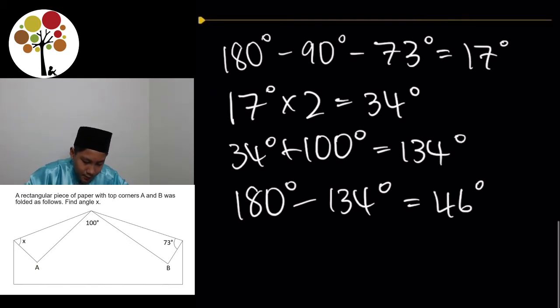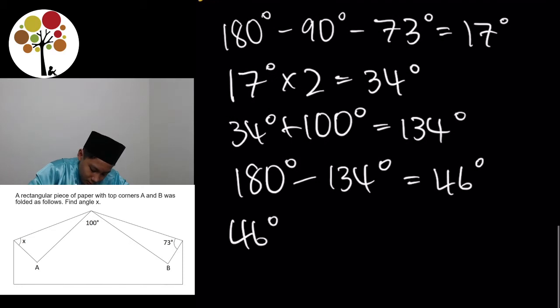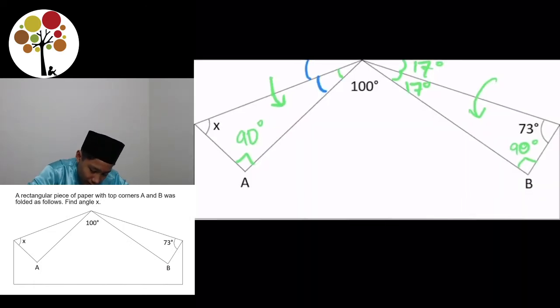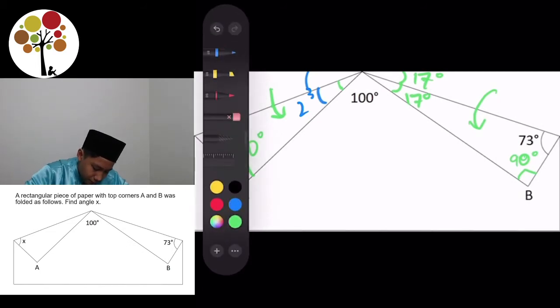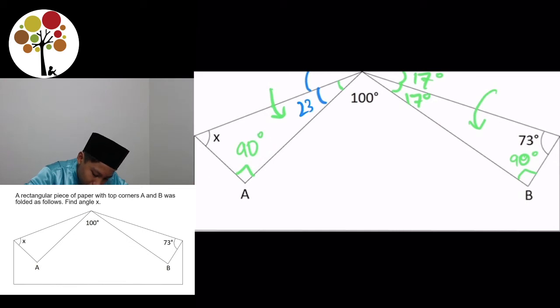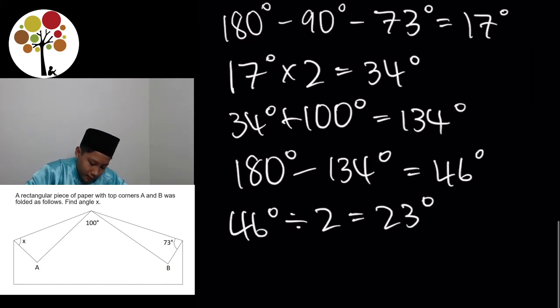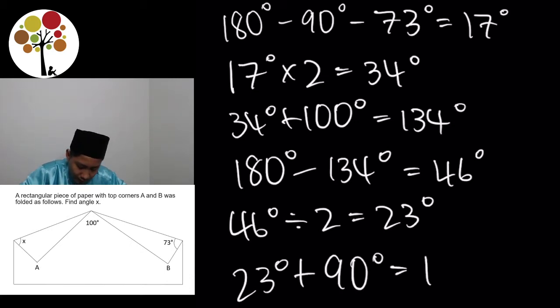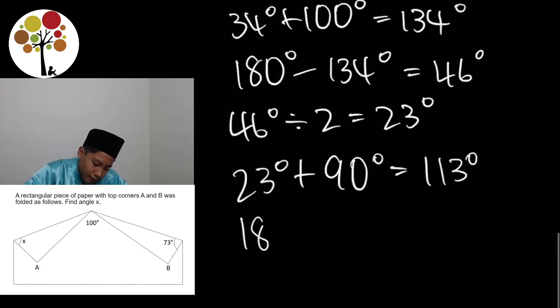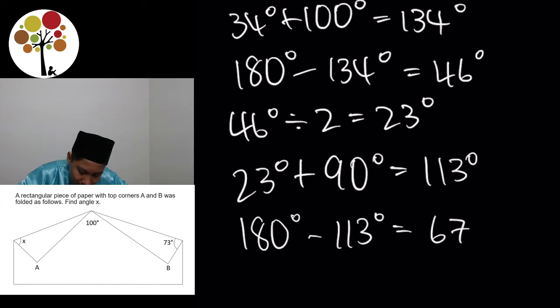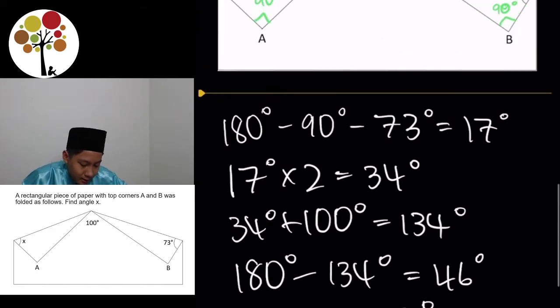And then, 46 degrees, you can divide it by 2. 46 degrees divided by 2 is equal to 23 degrees, which is this angle over here. 23 degrees. Okay. Now, we can take 23 degrees plus 90 degrees, which is equal to 113 degrees. And in order to find x, we simply take 180 degrees minus 113 degrees, which is equal to 67 degrees. And that is x and the answer for the first question.